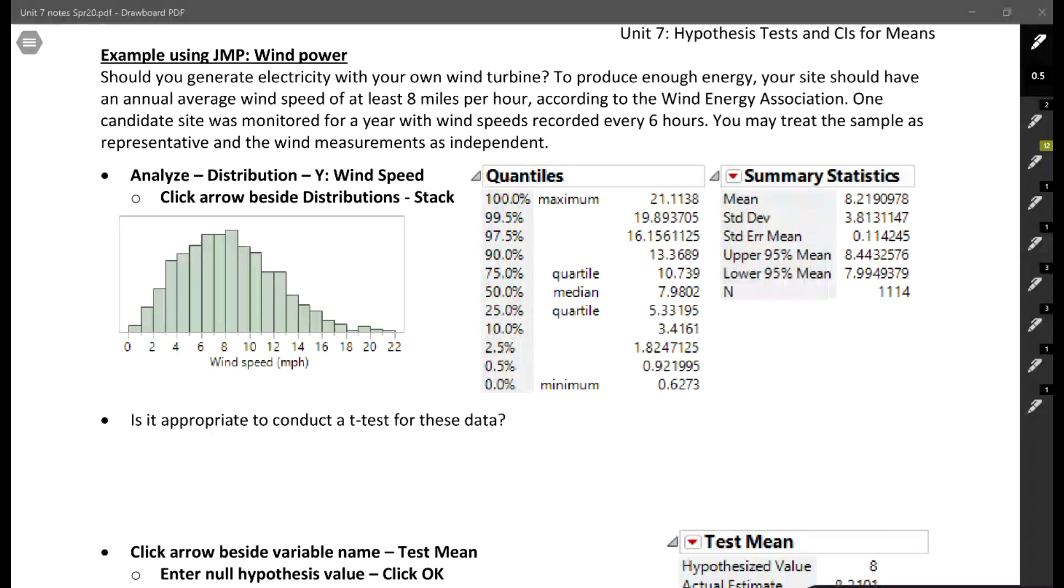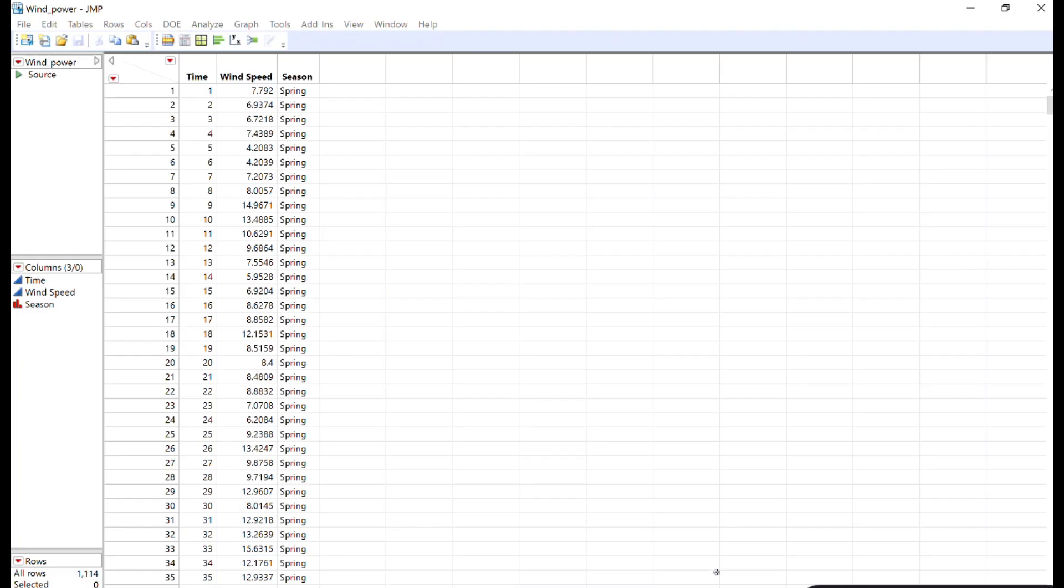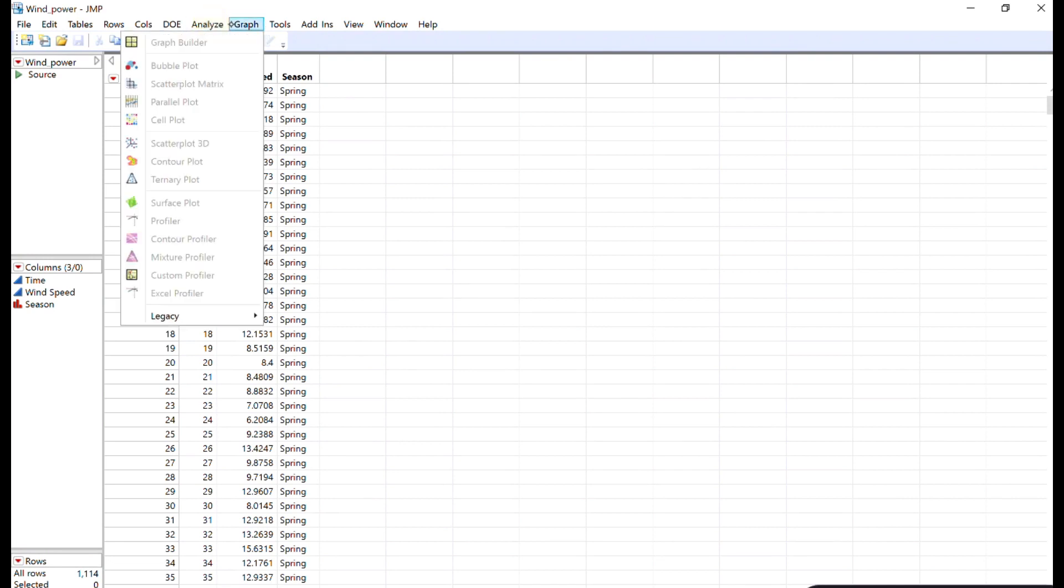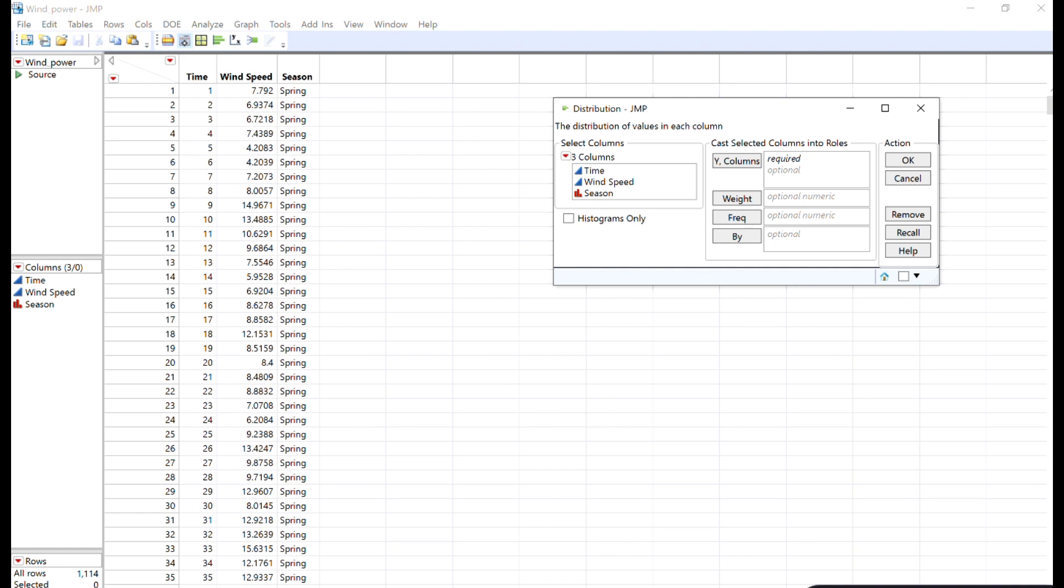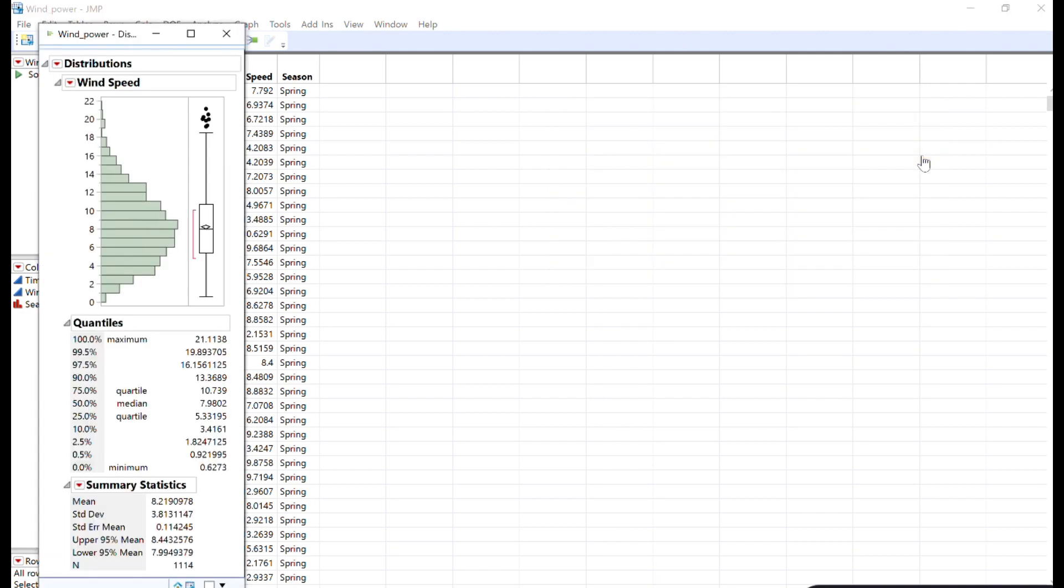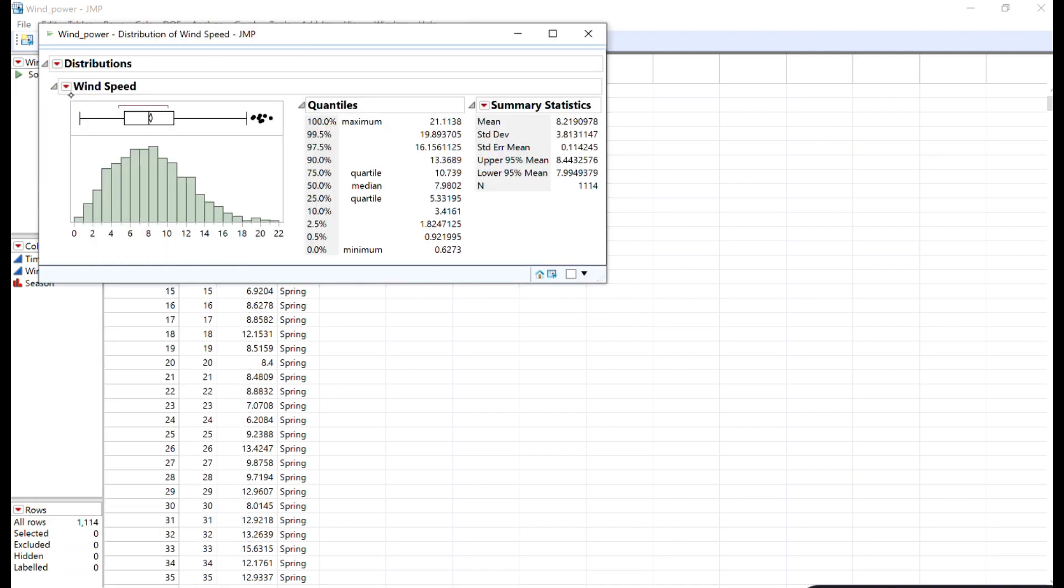First, we'll just look at these data. We're going to do analyze distribution. I opened my wind power data, and I'm going to do analyze distribution. I'm just interested in the wind speed, so I'm going to take wind speed and put it in the box for y and click OK. I like to see mine horizontal, so I'm going to stack it.